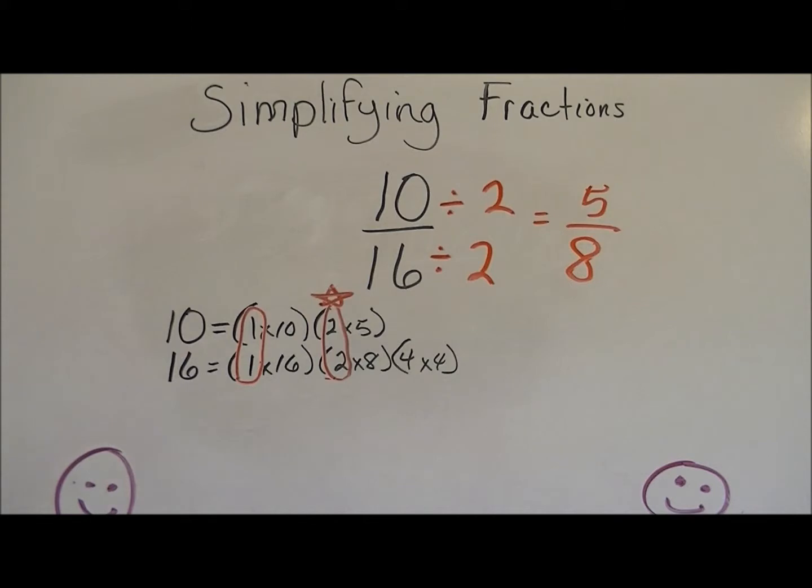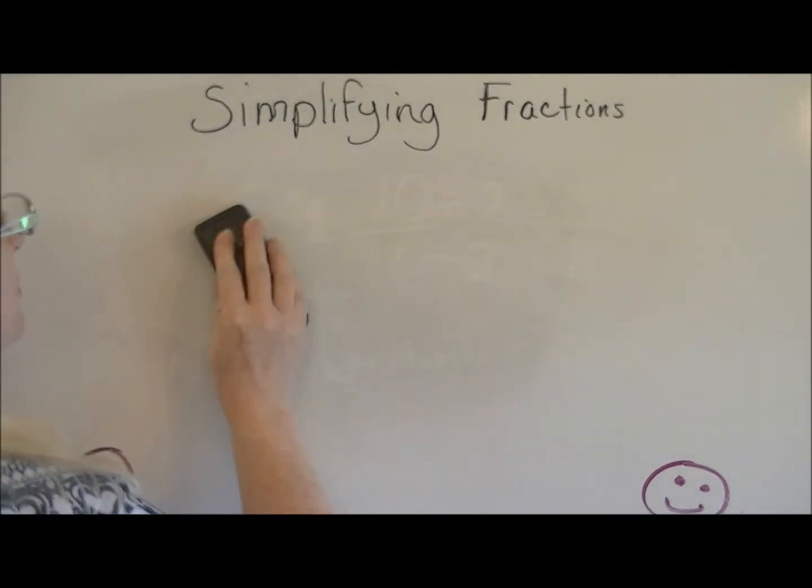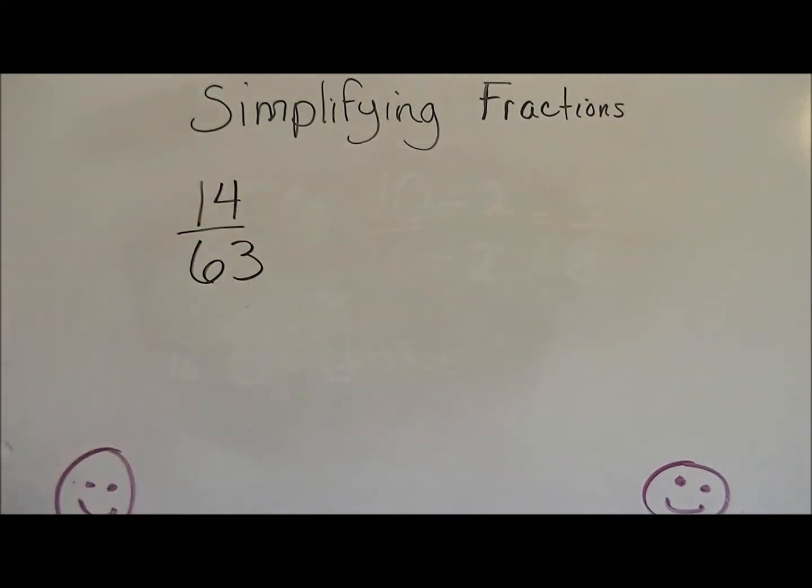Let's take a look at another one. Let's say that you had 14 over 63. Well, what are the factors of 14? 1 times 14 and 2 times 7.